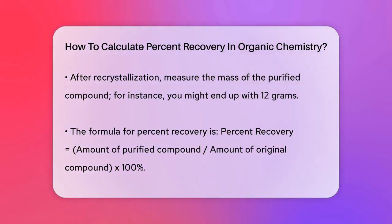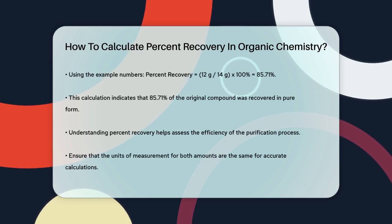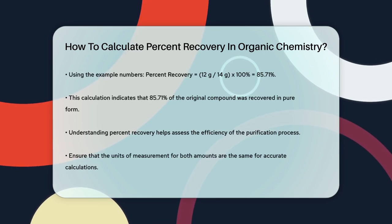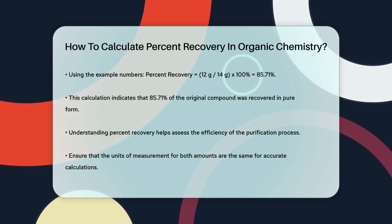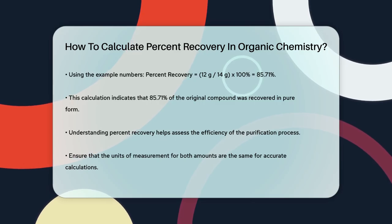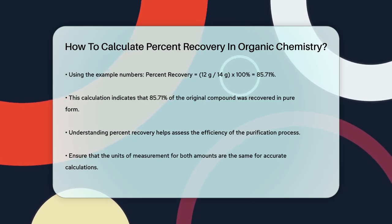So in this example, you've recovered 85.71% of the original compound as a pure substance. This calculation helps you understand the efficiency of your purification process. It tells you how much of the original material you were able to recover in its pure form, which is crucial for ensuring the quality of your final product.